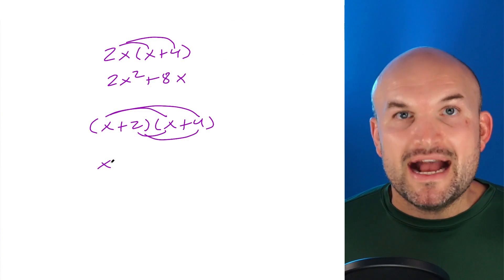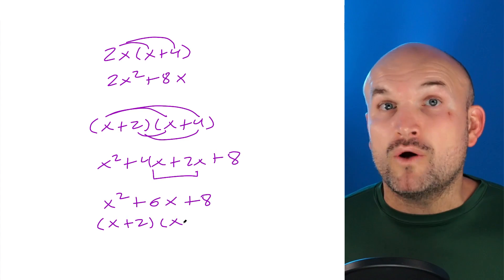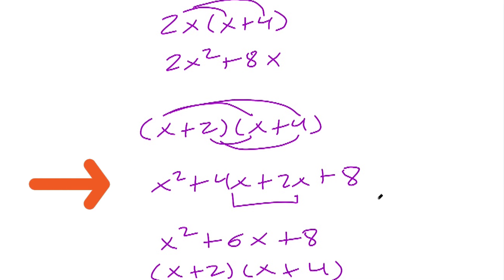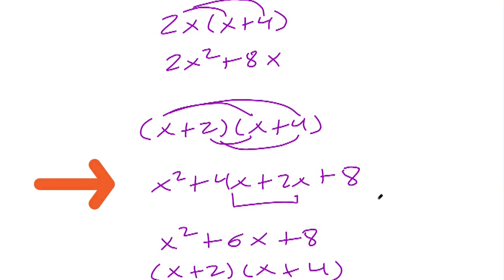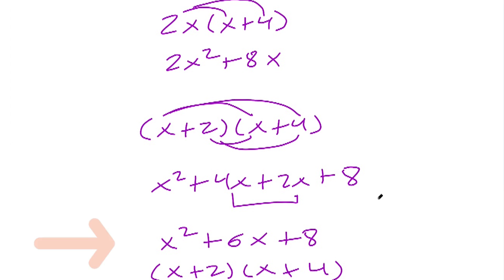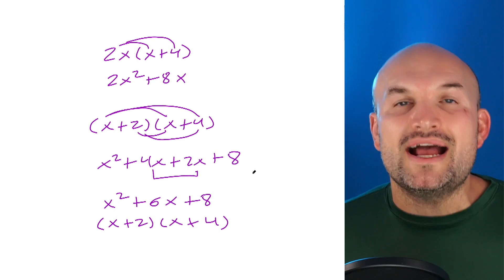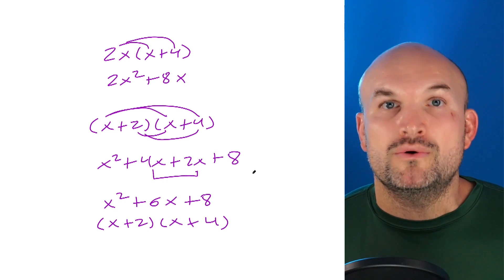When we have a binomial times a binomial we have to multiply every single term times every single term. We use the acronym FOIL — taking x times x to get x², 2 times 4 to get 8, 4 times x to get 4x, and 2 times x to get 2x. Here's where the magic happens: the two middle terms are like terms, so we combine them. 4x + 2x gives 6x, taking us from a product of two binomials back down into a trinomial. So to factor a trinomial, we simply rewrite it as the product of those two binomials.